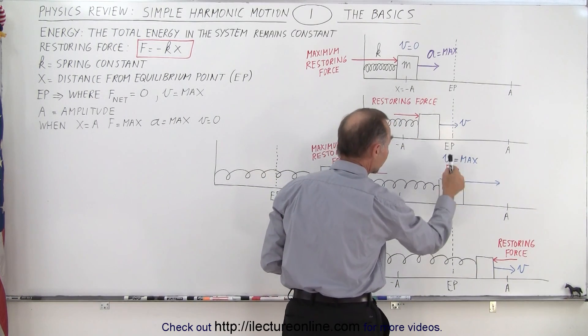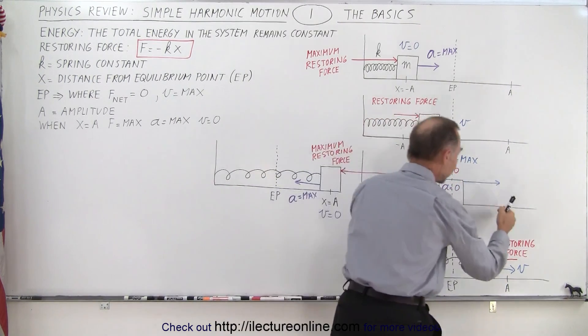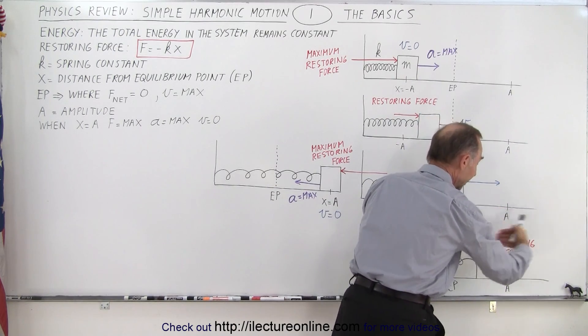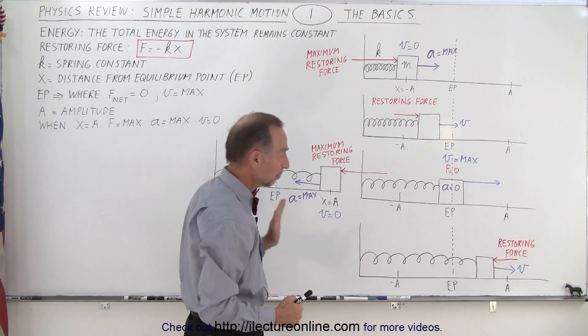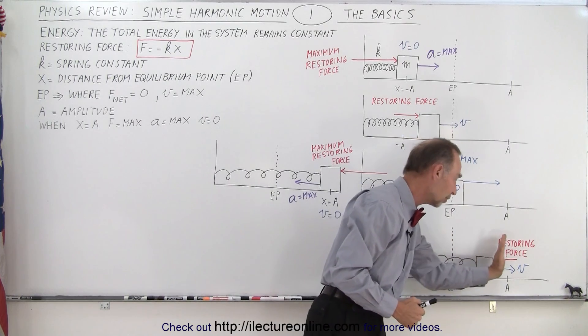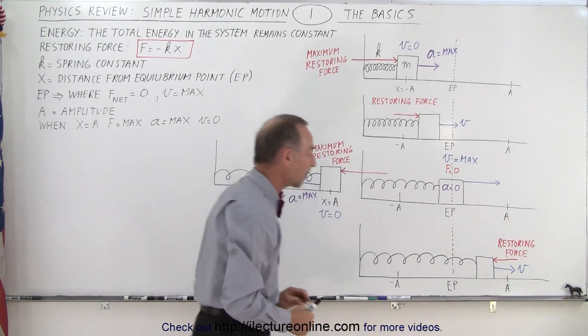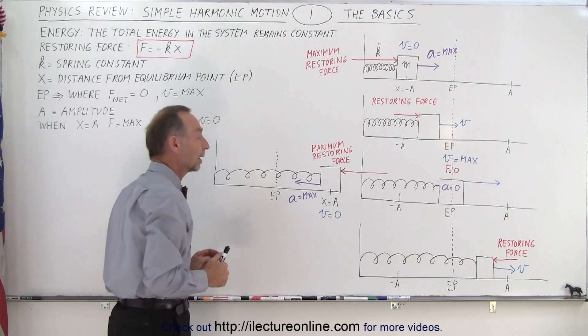When it reaches the equilibrium point, the force is zero. When it shoots past the equilibrium point, the restoring force begins to push it in the opposite direction. But because of its velocity, it will continue to go until it reaches its maximum amplitude, and then the force will begin to push it back.